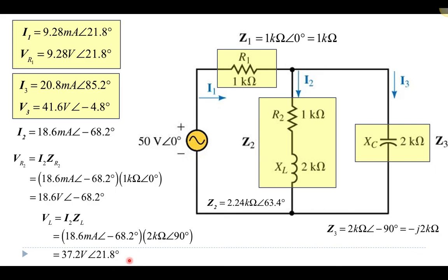The key takeaway is that analyzing AC circuits with capacitors, resistors, and inductors follows the same process as analyzing purely resistive series-parallel circuits: identify what's in series and in parallel, reduce the circuit to one equivalent component, then work backwards through your pictures. The big difference is that you're using impedance instead of resistance, and those impedance values are phasors, so you must add, subtract, divide, and multiply using phasor notation.